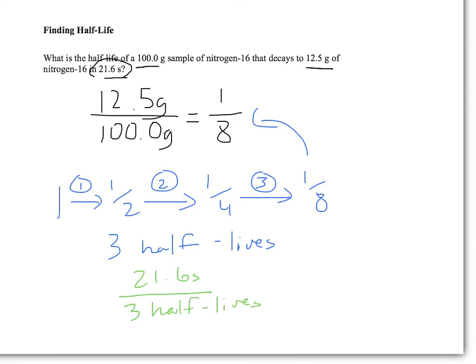And that division gives us 7.2 seconds per half-life, meaning that each half-life is going to be 7.2 seconds.